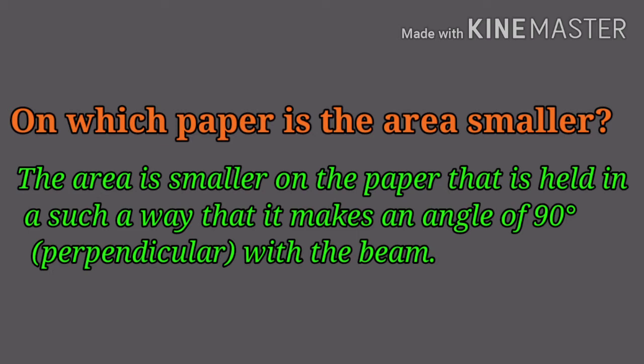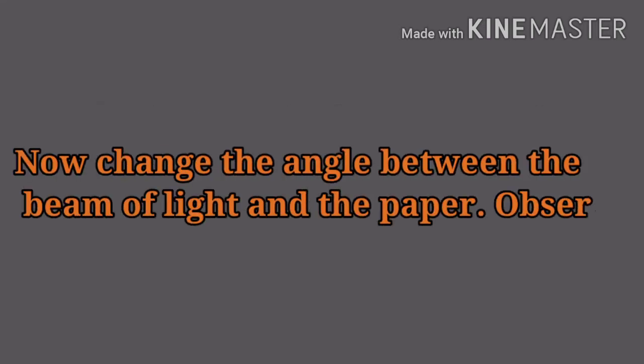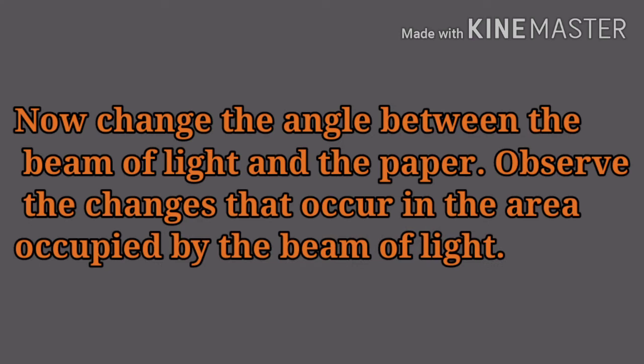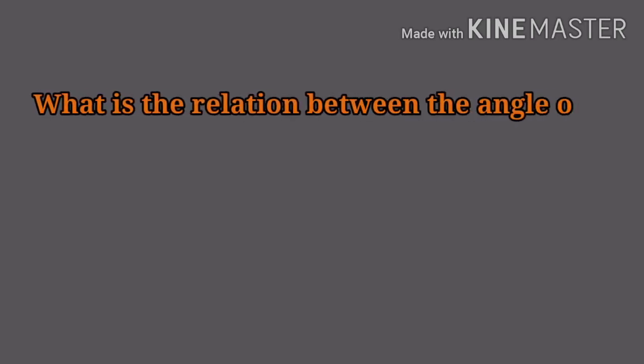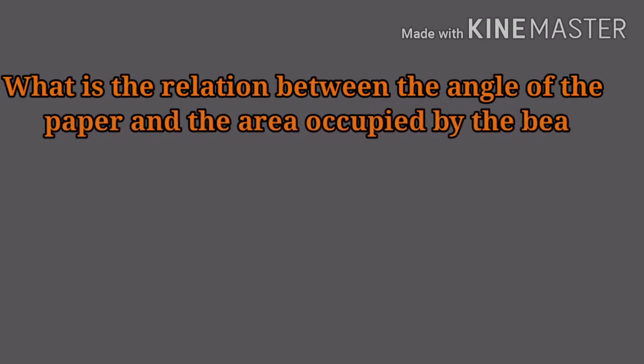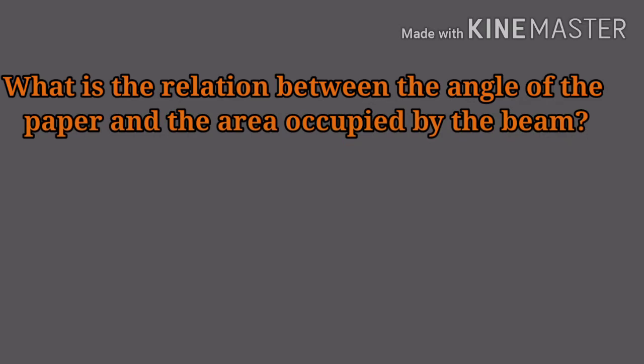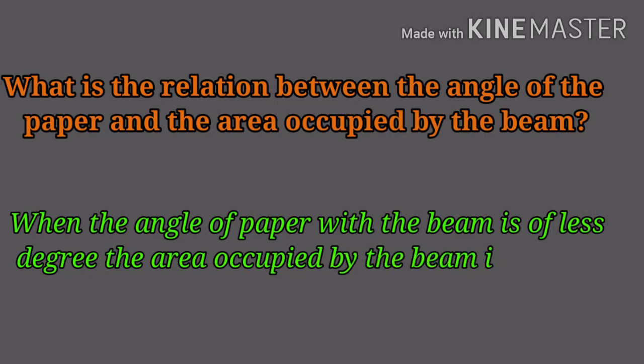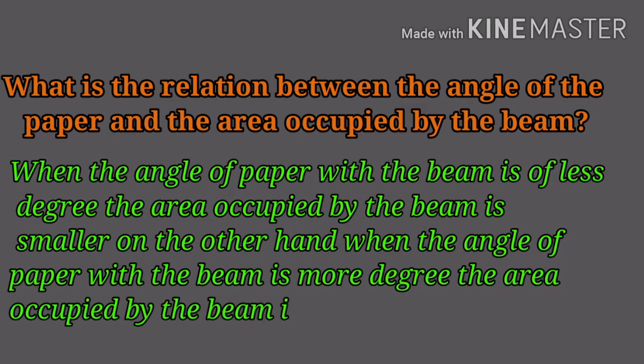Now change the angle between the beam of light and the paper. Observe the changes that occur in the area occupied by the beam of light. What is the relation between the angle of the paper and the area occupied by the beam? When the angle of paper with the beam is of less degree, the area occupied by the beam is smaller. On the other hand, when the angle of paper with the beam is of more degree, the area occupied by the beam is larger.